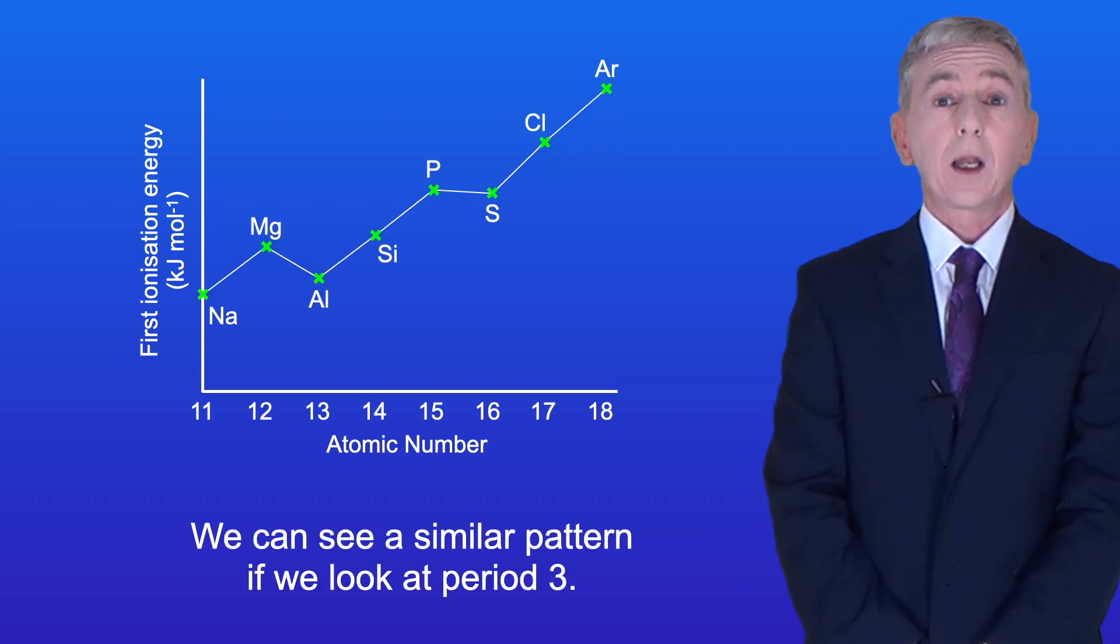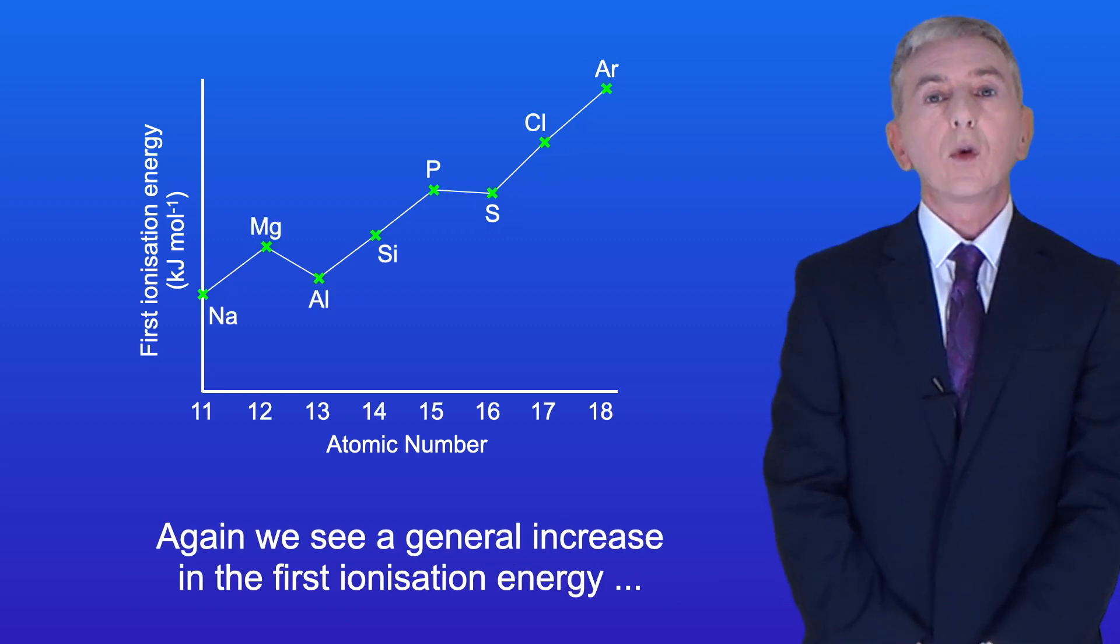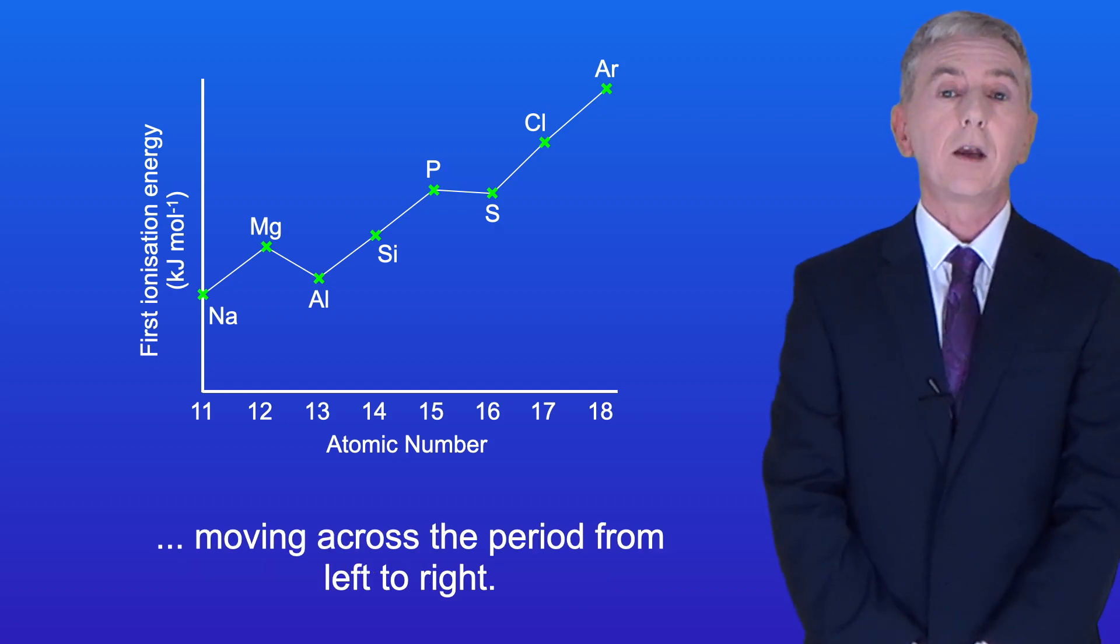We can see a similar pattern if we look at period 3. Again we see a general increase in the first ionization energy moving across the period from left to right.